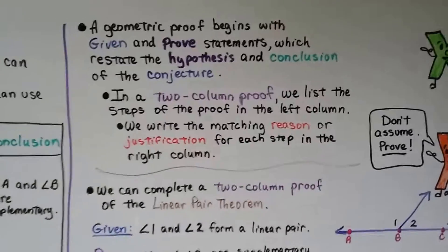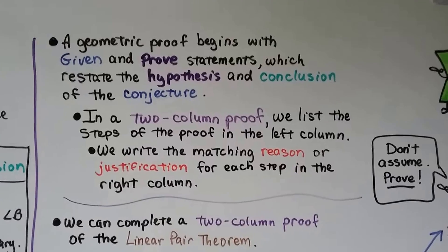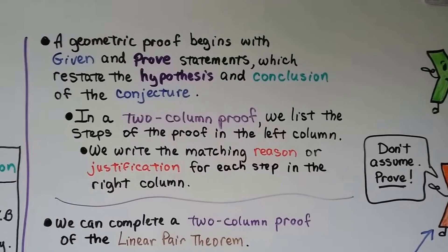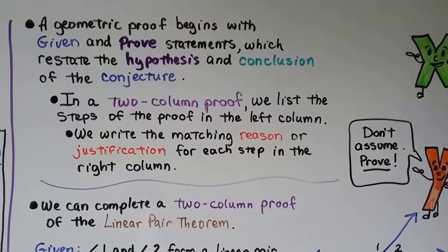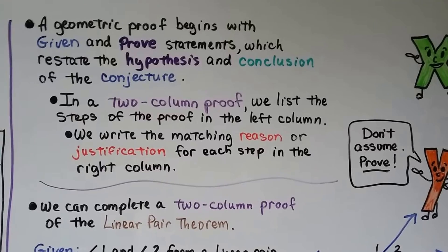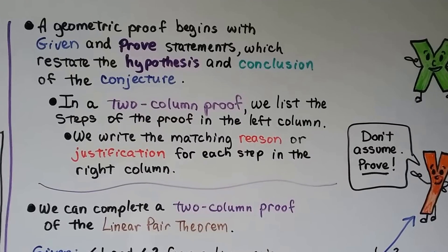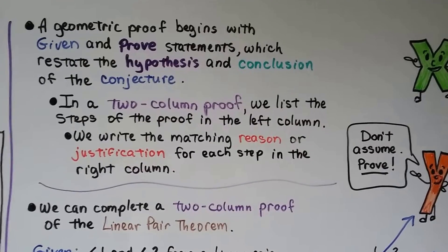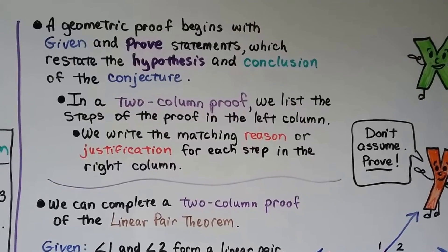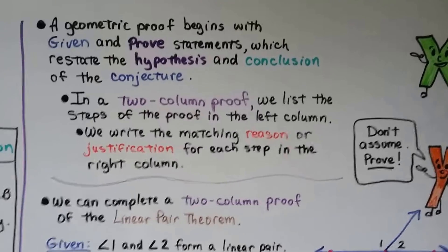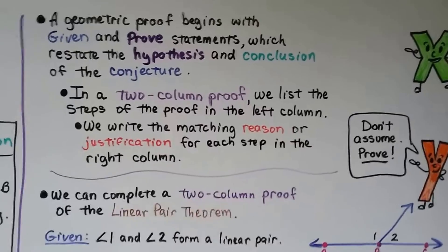A geometric proof begins with given and prove statements which restate the hypothesis and conclusion of the conjecture. In a two-column proof, we list the steps of the proof in the left column and write the matching reason or justification for each step in the right column. We never assume when doing a proof — we always prove.